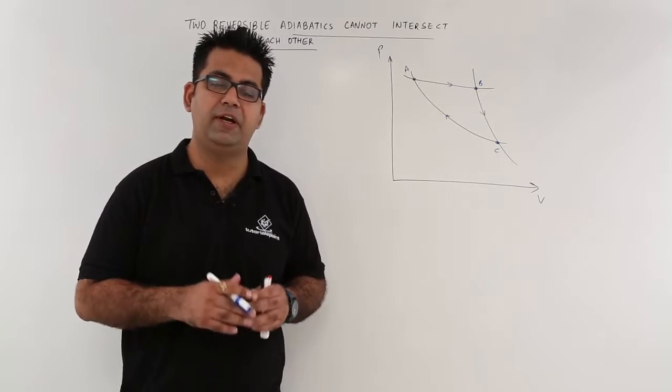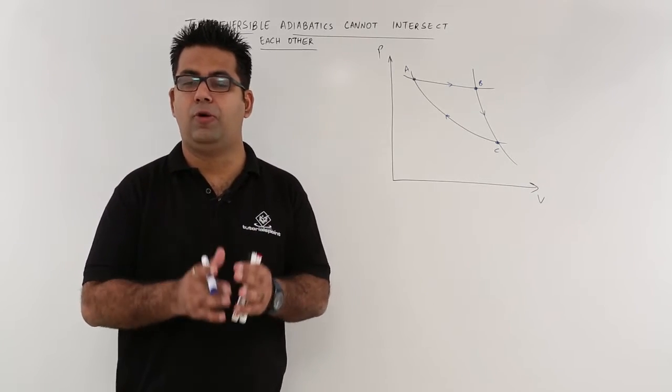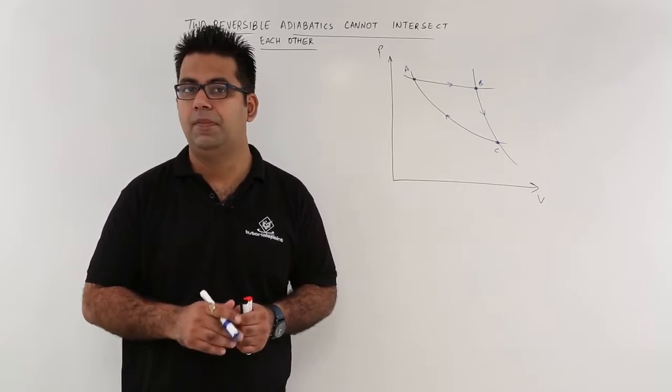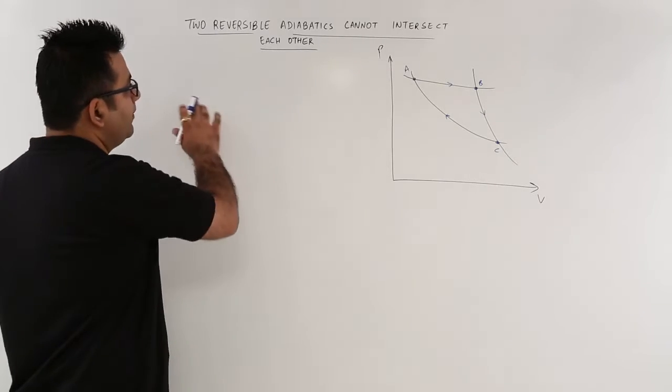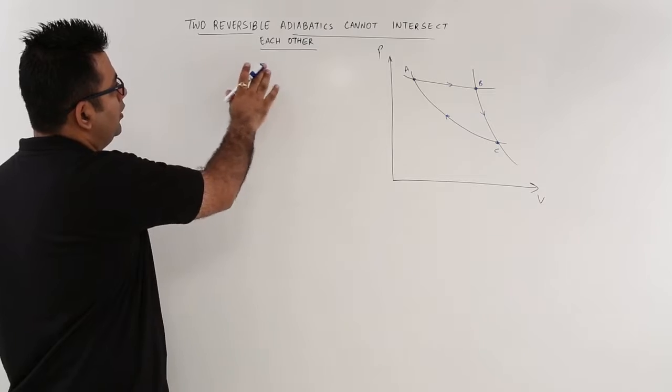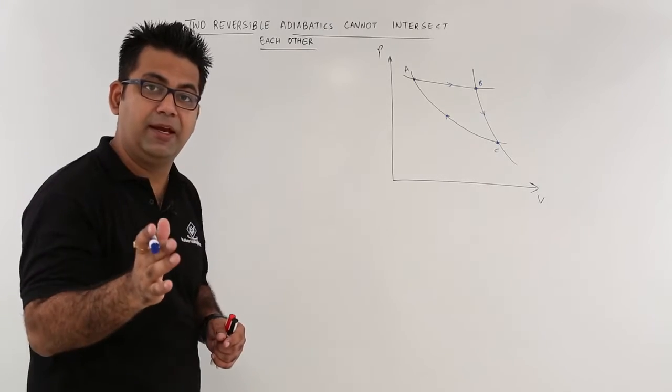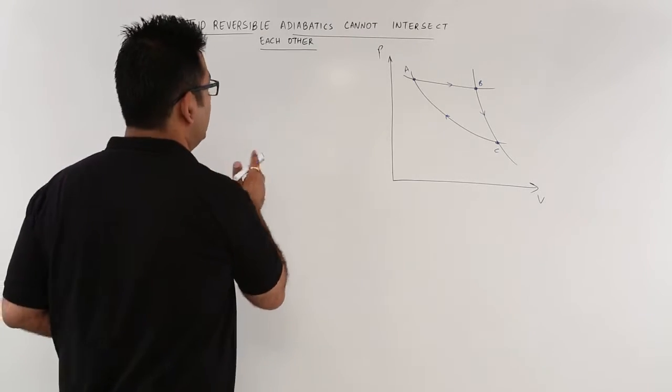Now in the previous video, we introduced the concept of entropy in very brief detail. Now let's take the discussion a bit forward and talk about why two reversible adiabatics can never intersect each other.